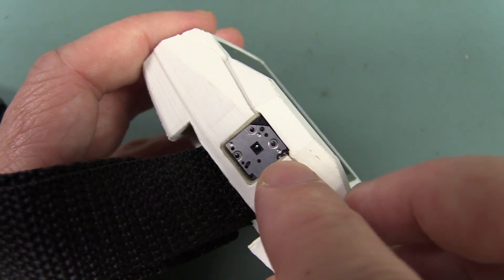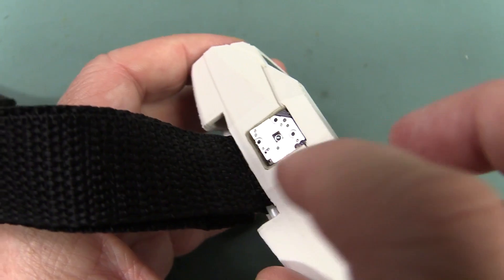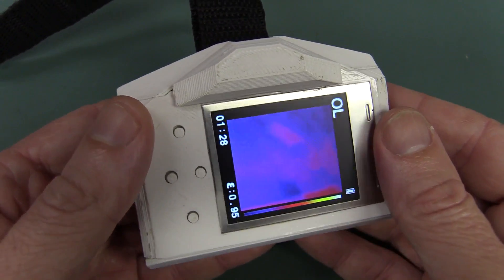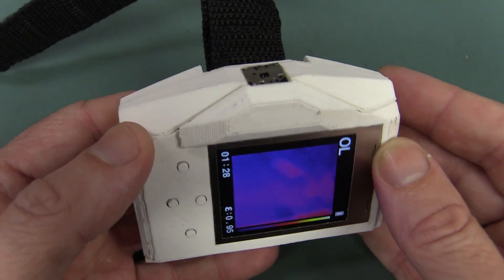As you can see, we've got the Lepton sensor sitting in there. It doesn't have the original germanium lens from the thing, but it seems to work reasonably well without it.